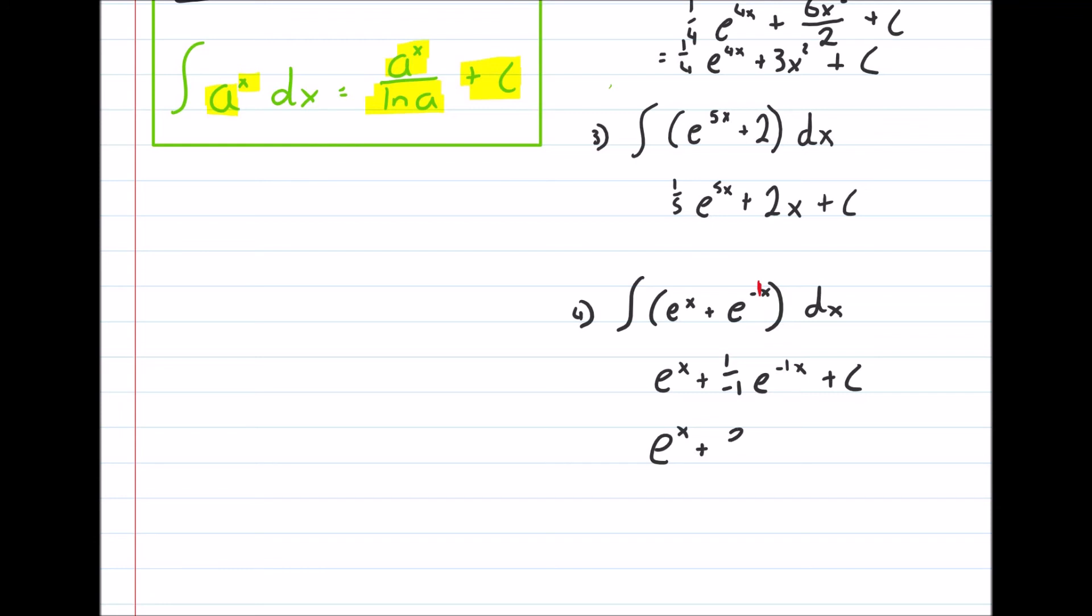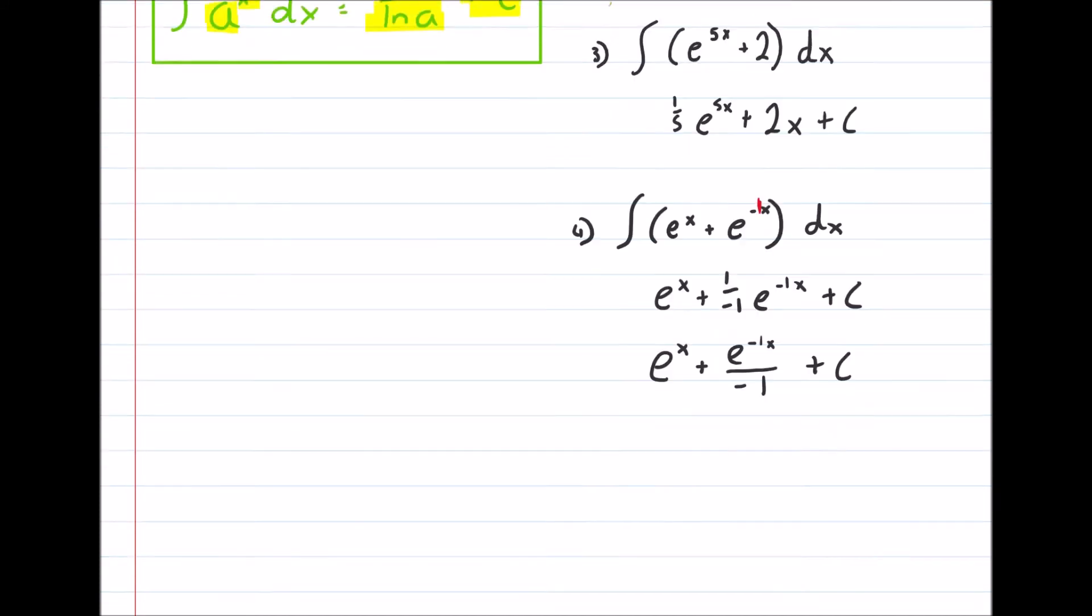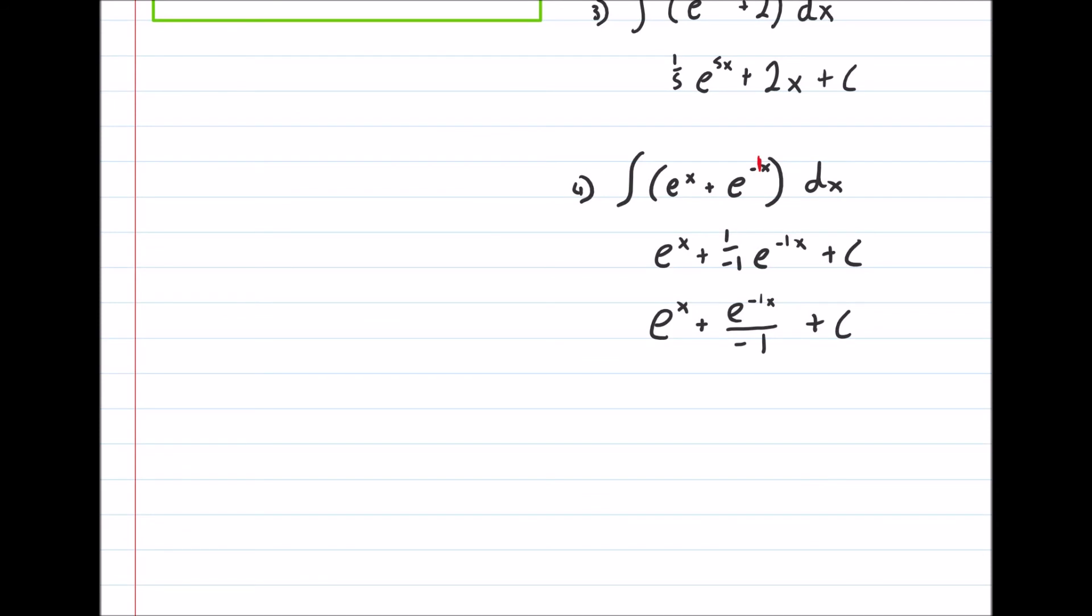e to the power of x, plus e^(-1x) over minus 1, plus c. We could leave it like that, but just look here. e to the power of x, plus. Now, if we look at this, e to the power of minus 1x, well, that's the same as 1 over e to the x, over minus 1.